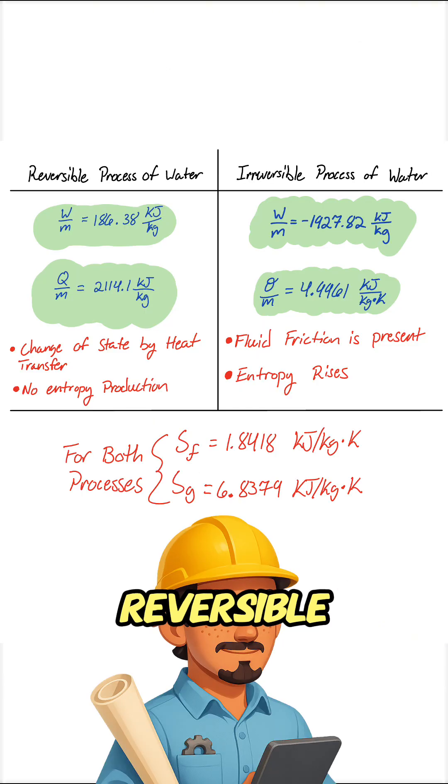So what did we see? In the reversible process, heat transfer drives the phase change with no entropy production. In the irreversible process, stirring adds work, entropy rises, and energy balances differently, even though the initial and final states are the same.